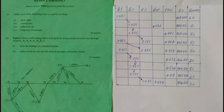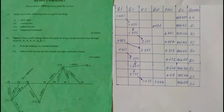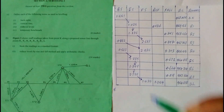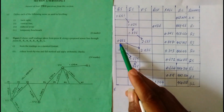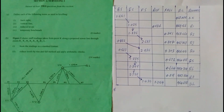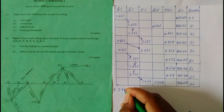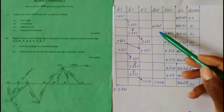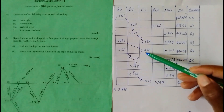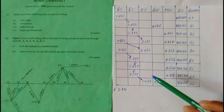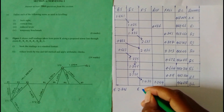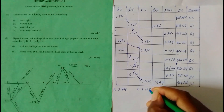Now we compute the summation of backsites and foresites. Summation of backsites: 1.551 plus 0.782 plus 0.563 gives 2.896. Summation of foresites: 2.683 plus 2.985 plus 1.435 gives 7.103.